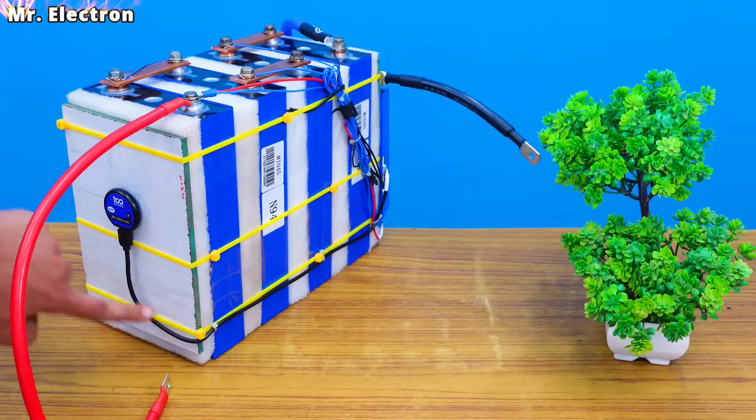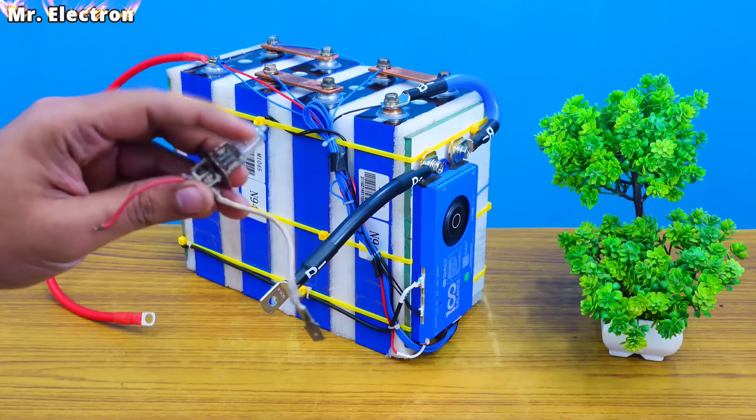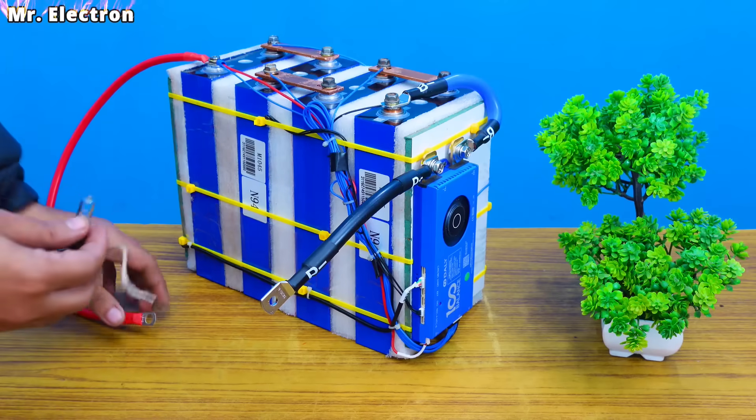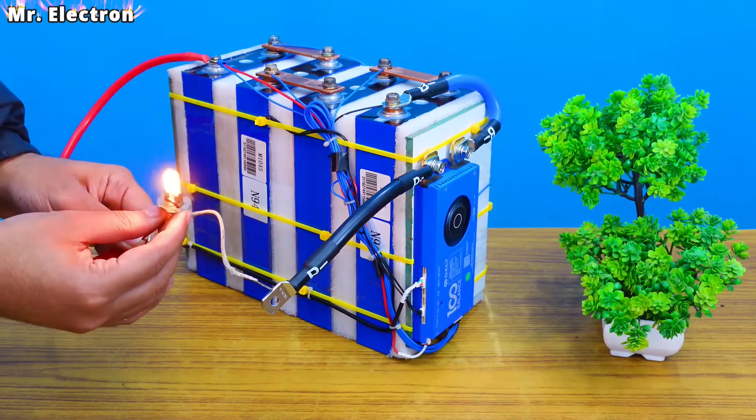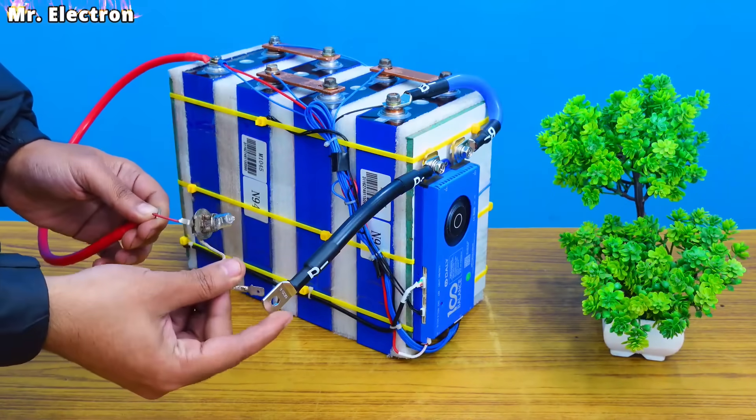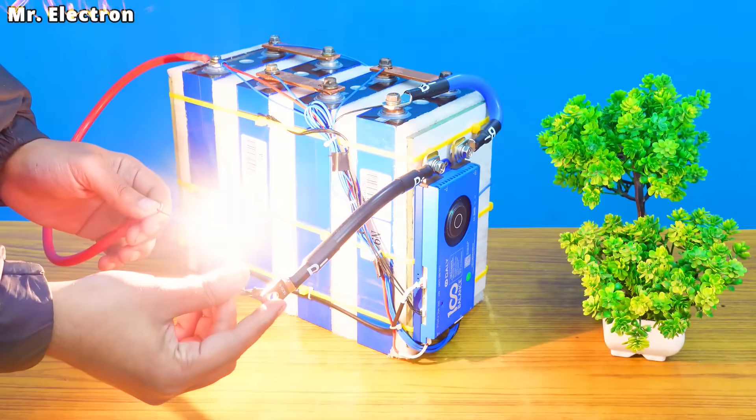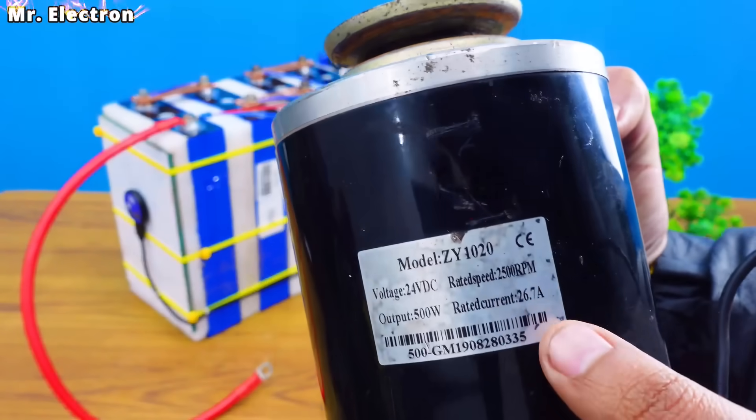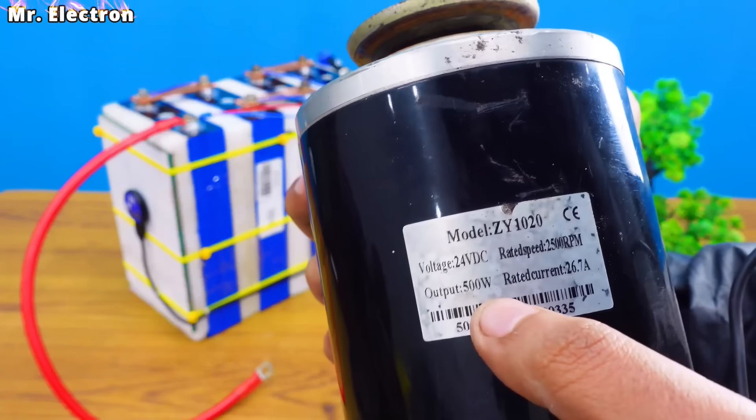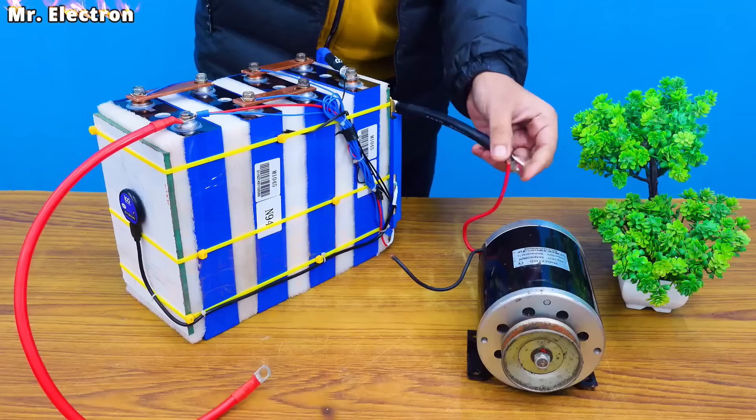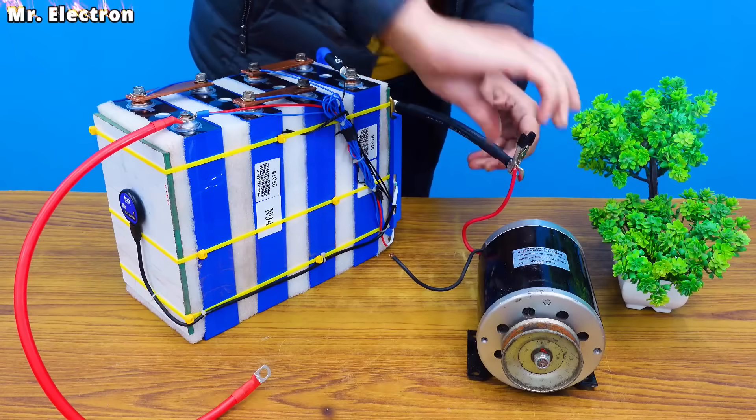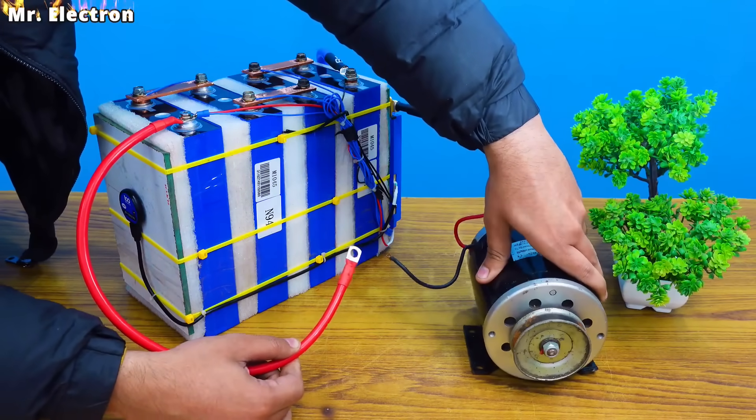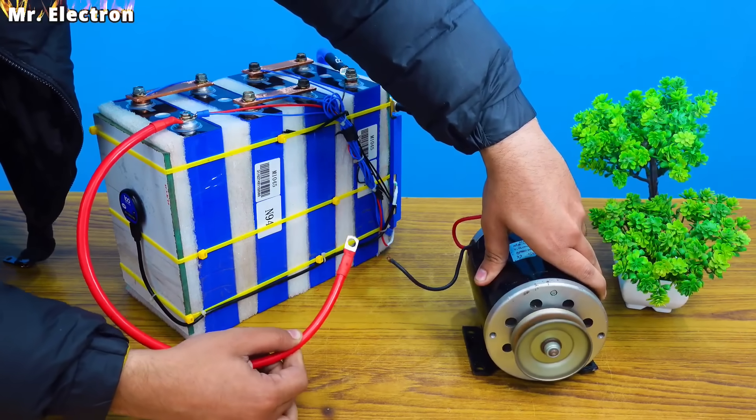So here I have this 12 volts, 100 watts car headlamp bulb. Let's connect it this time with much more power. Oh. See? So bright. Nice. It's very hot. Now this is a 26.7 ampere or 24 volts, 500 watts permanent magnet DC motor from an e-bike. So let's test this with my battery pack. Whoa. Nice.